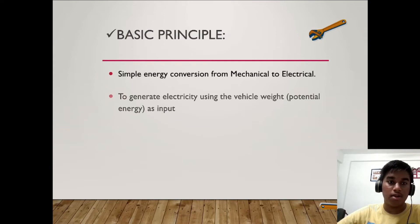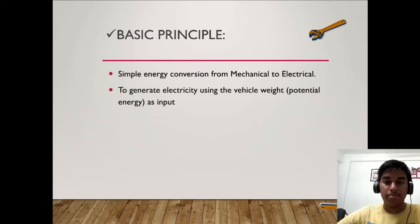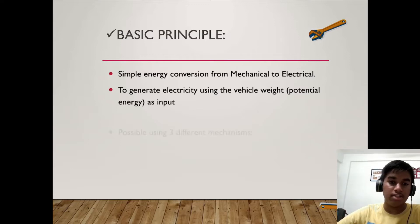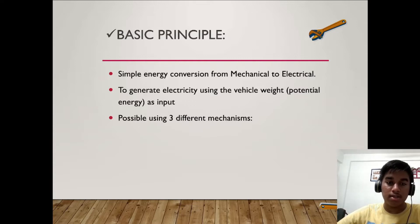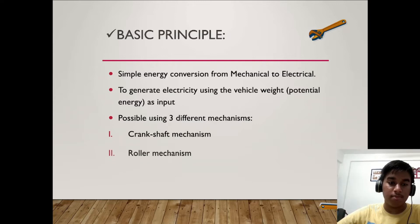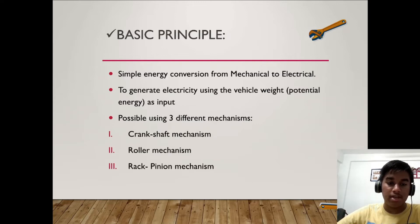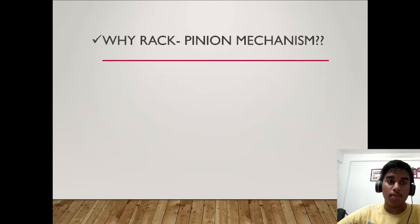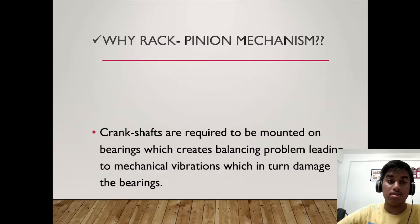Uses include energy charging of batteries and using them to light up streets. The basic principle is simple energy conversion from mechanical to electrical. To generate electricity using the vehicle weight potential energy as input, it is possible using three different mechanisms: crankshaft mechanism, roller mechanism, and rack-pinion mechanism.